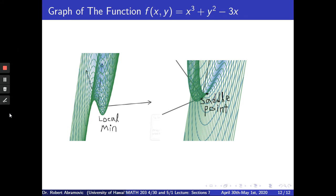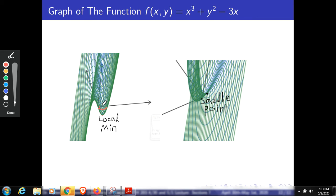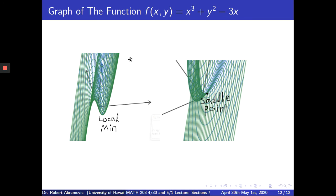Here's a graph of the function. You can notice the local min is what you'd expect — that bottom valley, a bowl facing upwards. The saddle point: in the y direction it is curving upwards, and in the x direction it is curving downwards — concave up in y and concave down in x — and that mixture creates a saddle point. That's it for today's lecture. I'll be posting some problems on MyMathLab based on these sections: Chapter 7, Sections 7.1, 7.2, and 7.3.